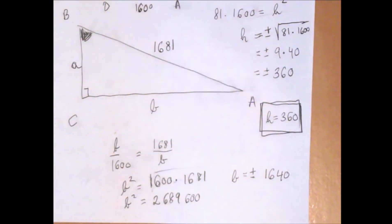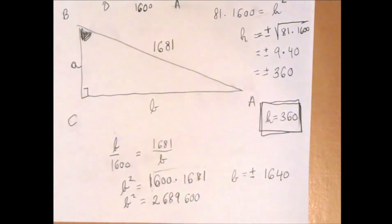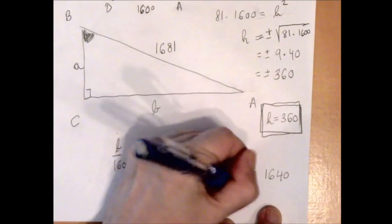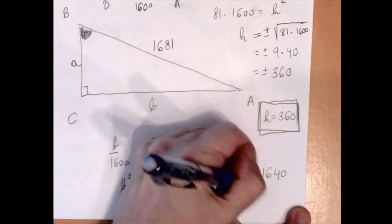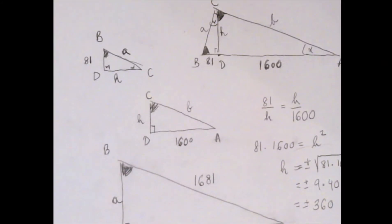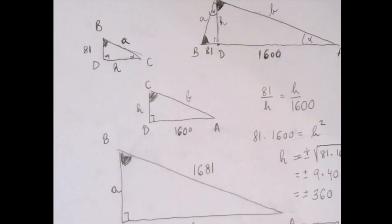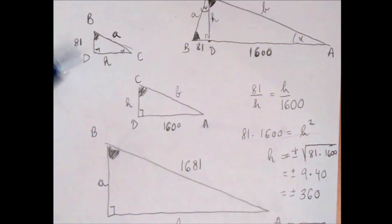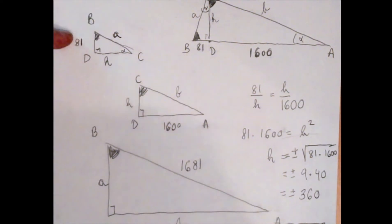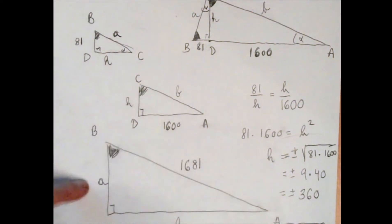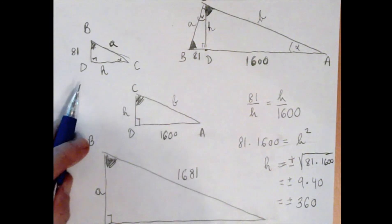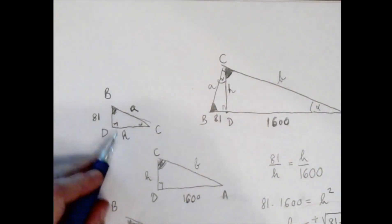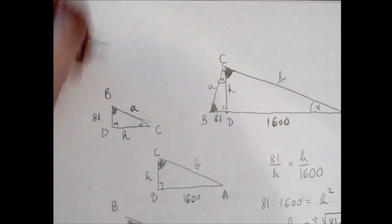Again we have two solutions for b, but we quickly eliminate the negative one because we are looking for the distance. Let's see if we can do something similar with a. Do we see two pairs of sides in which everything is known except for a?